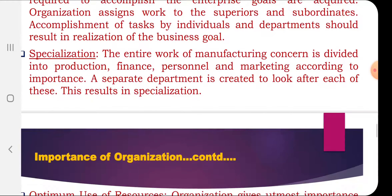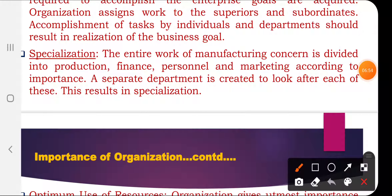The next importance is specialization. The entire work in the manufacturing process is divided into different departments — such as production, finance, purchase, personnel, and marketing. Separate departments are created to look after each area, and this results in specialization.